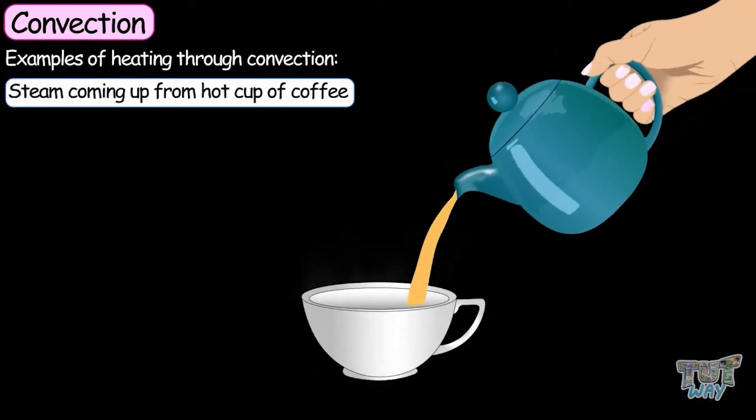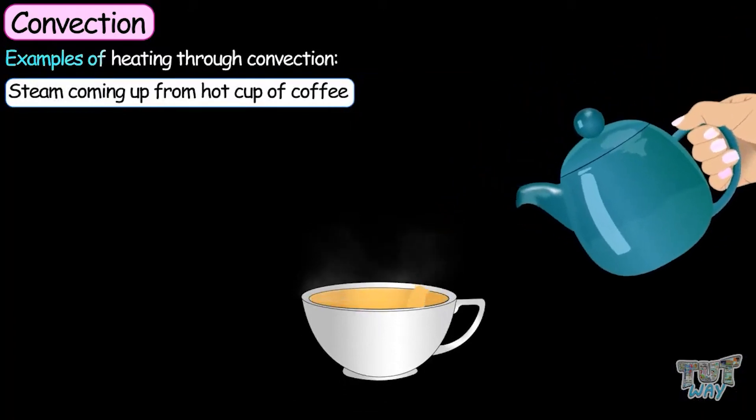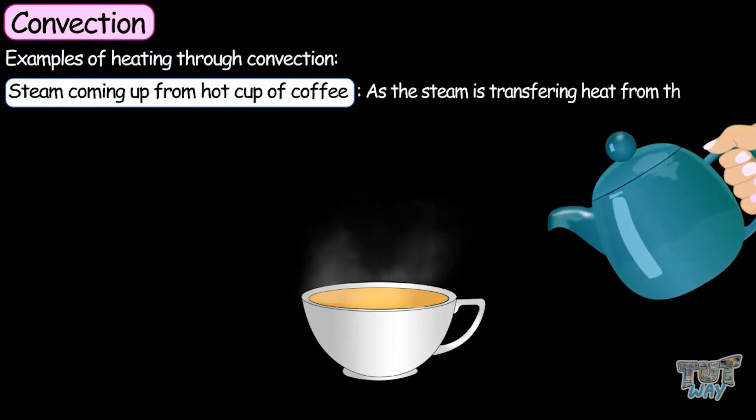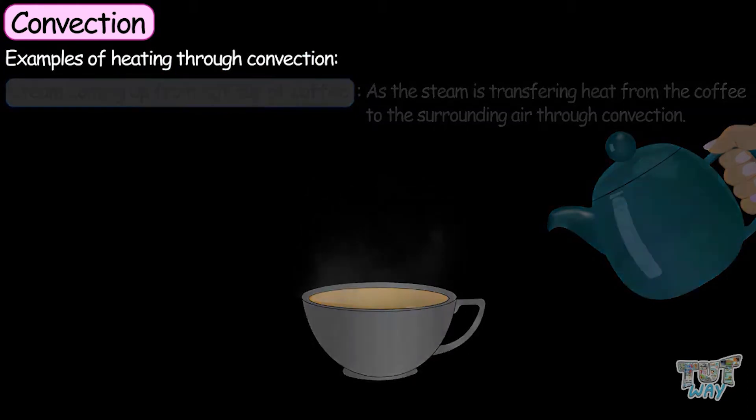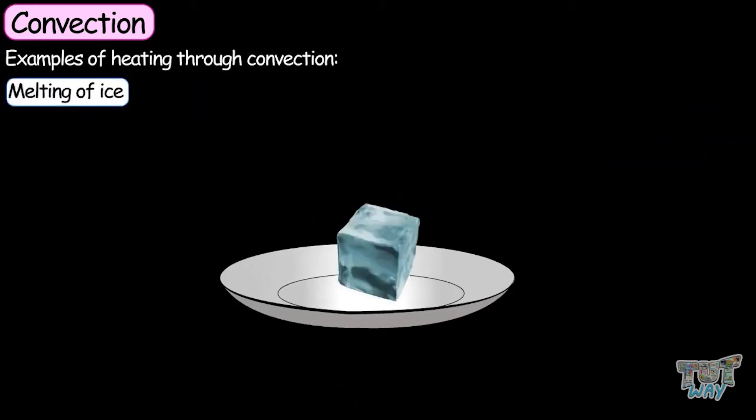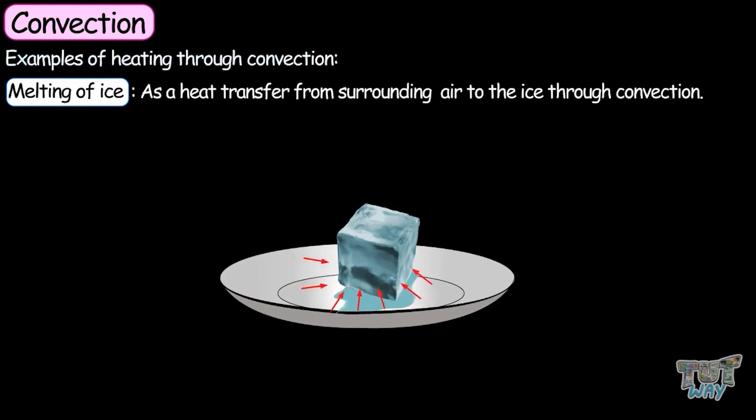Steam coming from a hot cup of coffee is an example of heat transfer through convection, as the steam is transferring heat from the coffee to the surrounding air through convection. Melting of ice is also an example of heat transfer through convection, as heat transfers from the surrounding air to the ice through convection.